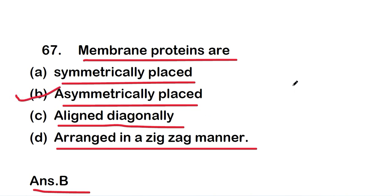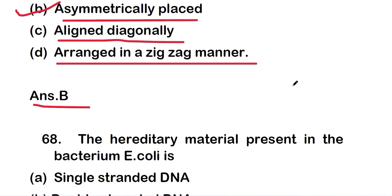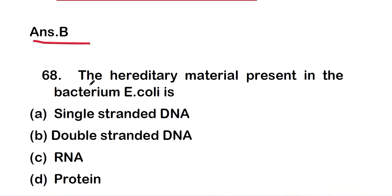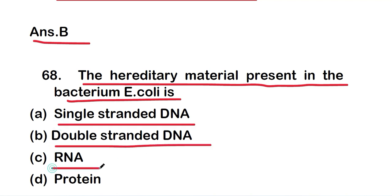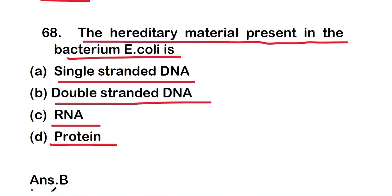Next question: the hereditary material present in the bacterium Escherichia coli is option A, single-stranded DNA; option B, double-stranded DNA; option C, RNA; or option D, protein. The right answer is option B — double-stranded DNA. So the hereditary material in E. coli is double-stranded DNA (dsDNA).